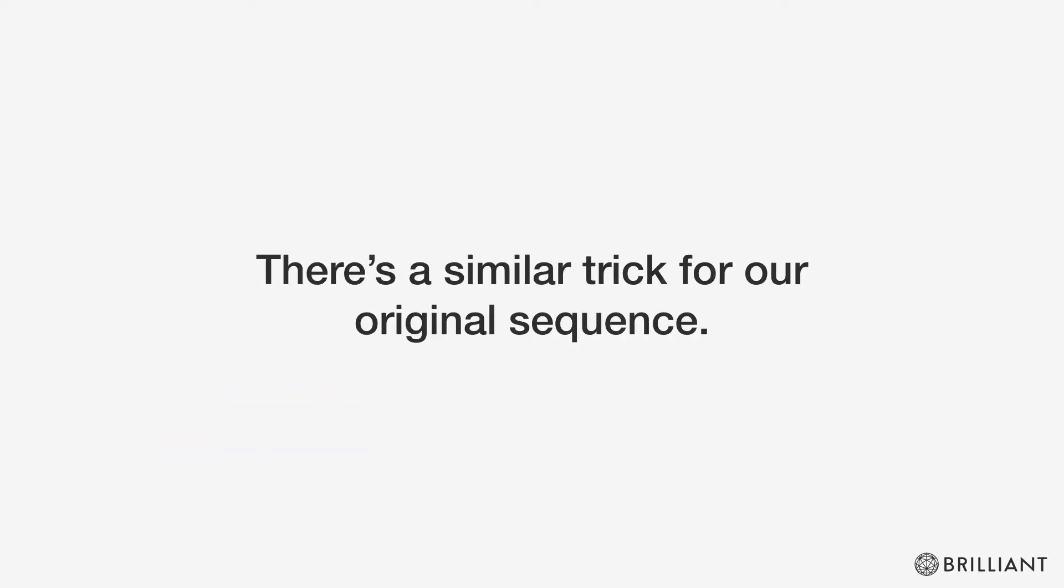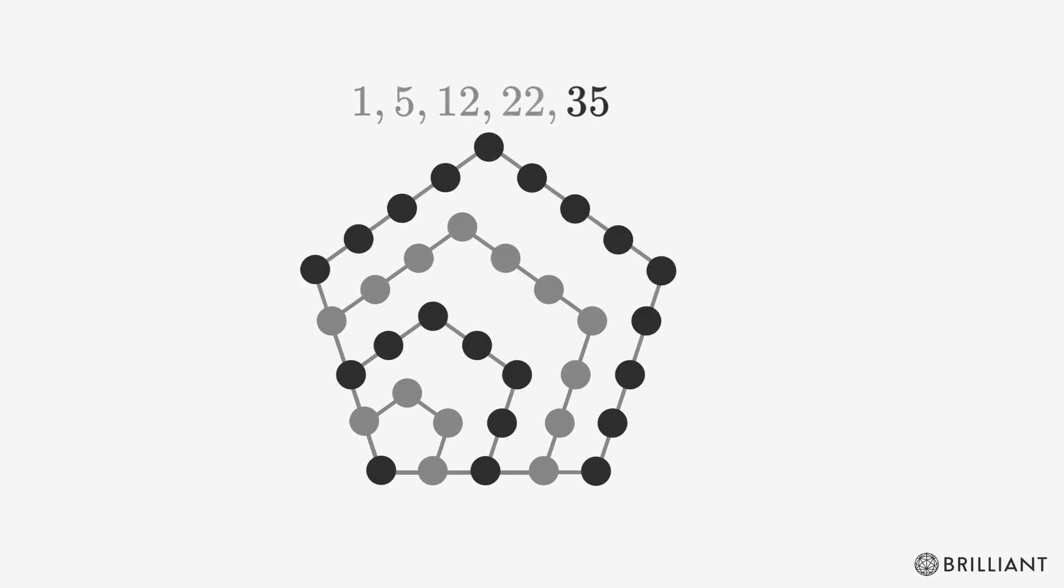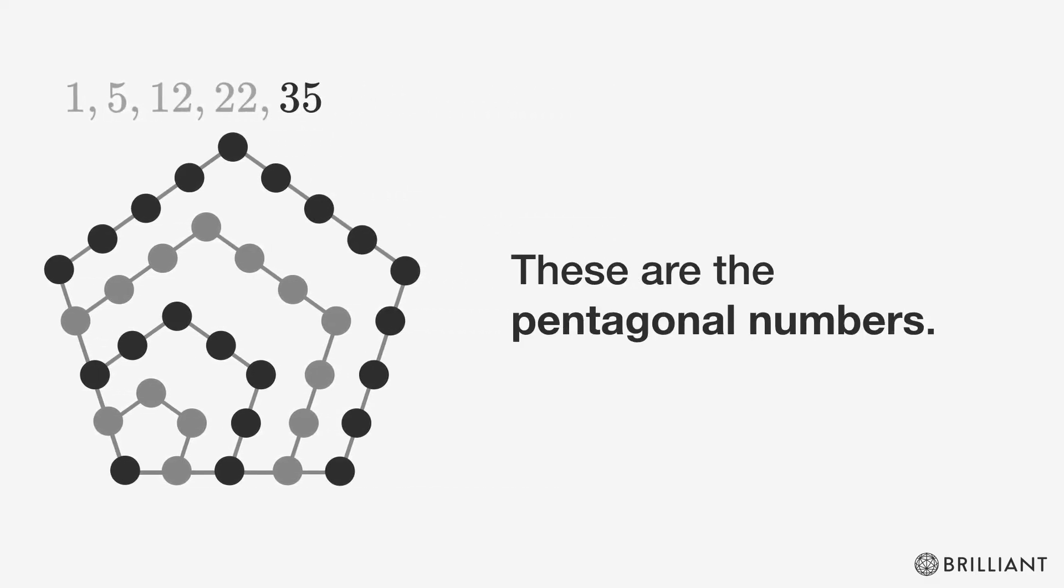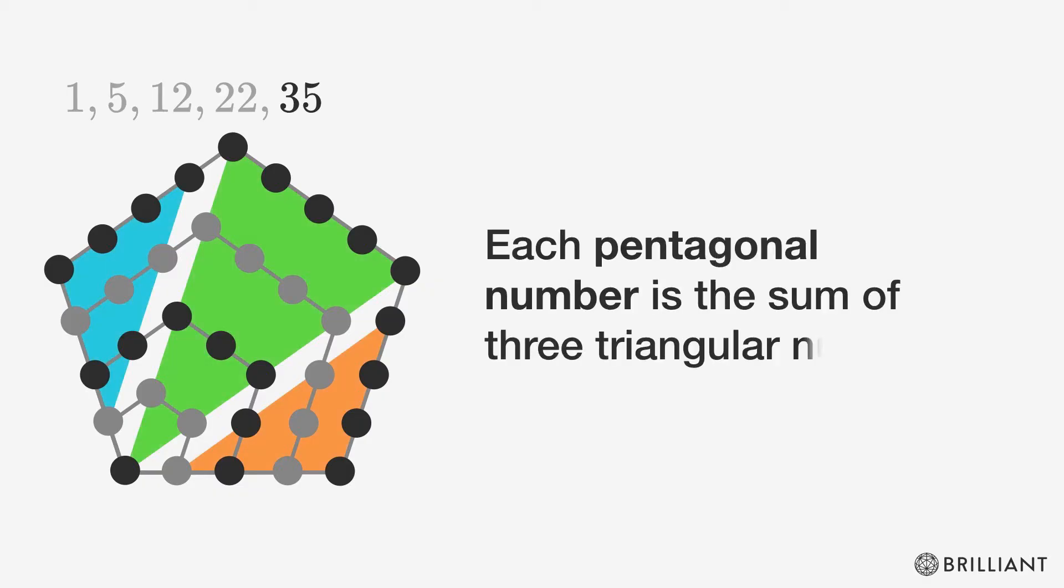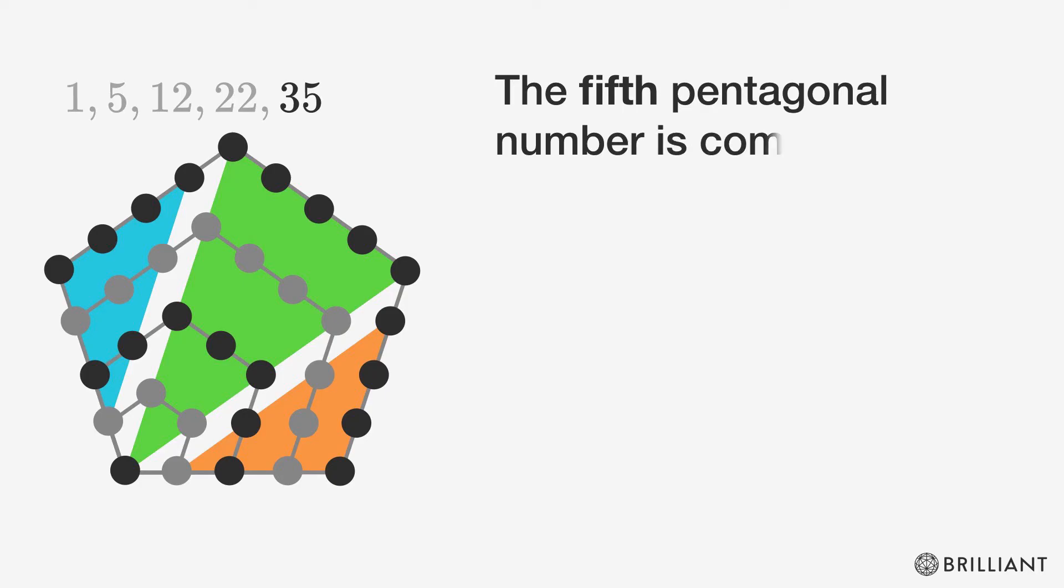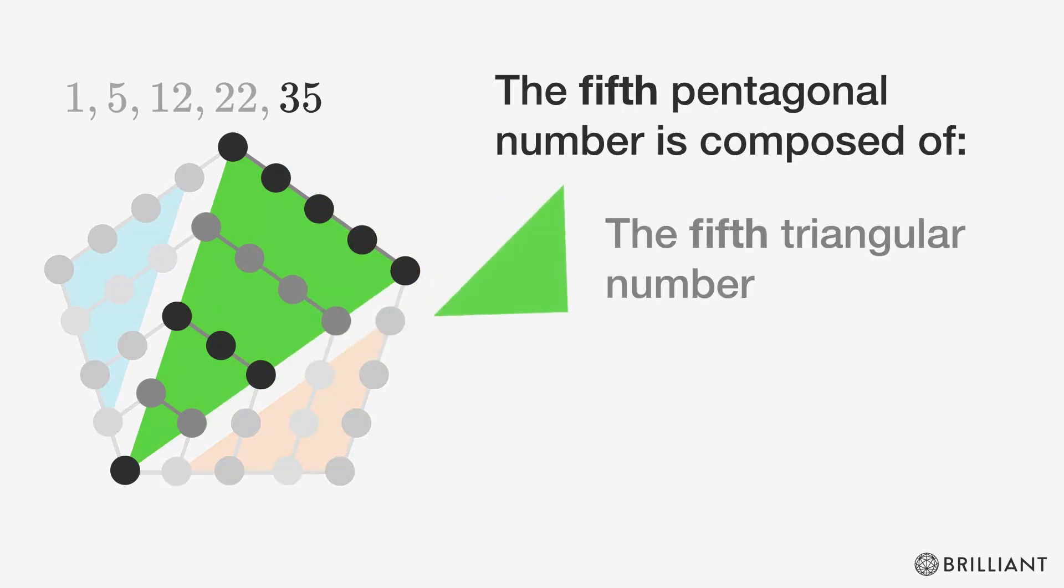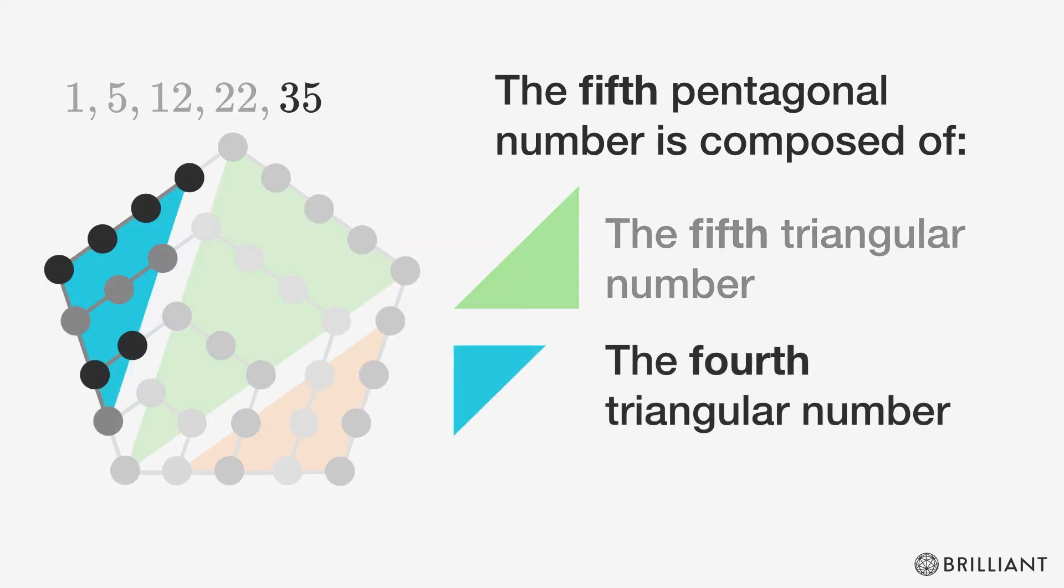There's a similar trick for our original sequence. If we represent them visually we can see that they can form pentagons. Unsurprisingly they're called the pentagonal numbers. Each pentagonal number is the sum of three triangular numbers. The fifth pentagonal number is composed of the fifth triangular number and the fourth triangular number times 2.